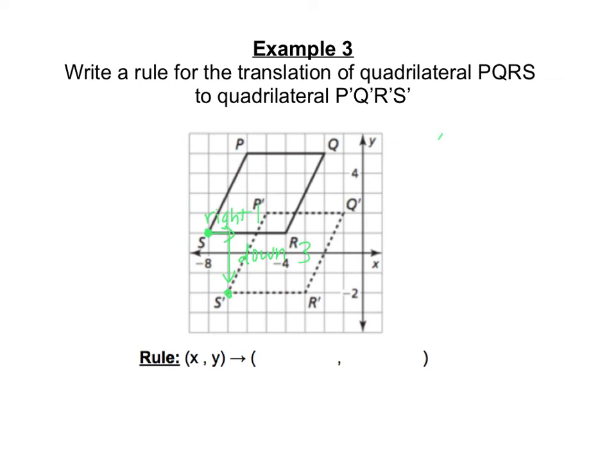In vector form, right is positive 1, and down 3 is negative 3. In translation rule form, we would do (x, y) becomes 1 is positive, I'm moving to the right, so that's x plus 1, and y is moving down 3, so that's y minus 3.